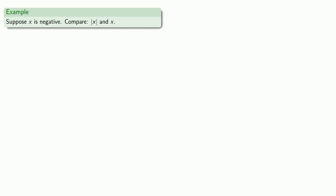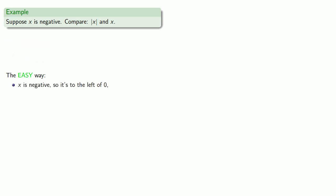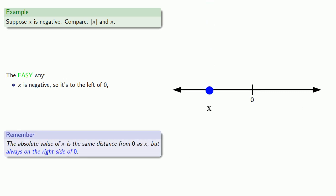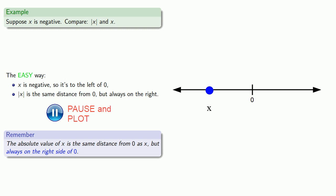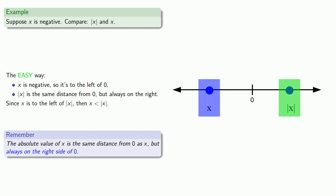The reason this is useful is that we don't even have to know what these numbers are. Suppose x is negative — let's compare the absolute value of x and x itself the easy way. x is negative, so it's to the left of 0. The absolute value of x is the same distance from 0 as x is, but always on the right side of 0. Since x is to the left of the absolute value of x, we know that x is less than the absolute value of x.